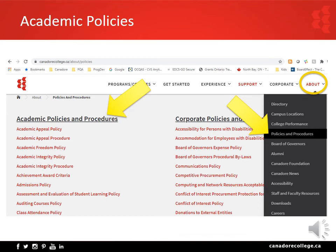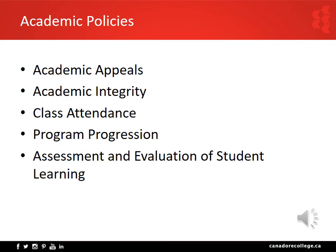Academic policies and procedures are found under the About link from the college's website. Click on the link and select Policies and Procedures from the drop-down menu. Academic policies are listed in the column on the left. There are a number of academic policies and procedures that may be important throughout your studies at Canadore College. Policies are principles, rules, and guidelines adopted by an organization for how to make decisions and take action. The procedure provides step-by-step instructions on how to implement the policy. You are encouraged to review academic policies and procedures as needed.